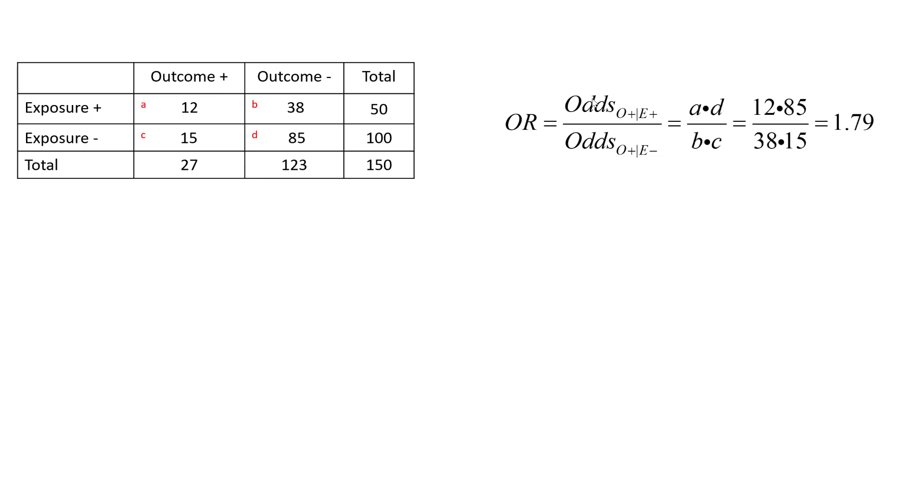In a cohort study, the odds ratio represents the odds of outcome given exposure compared to the odds of outcome given non-exposure. Using the standard calculation here, we end up with an odds ratio of 1.79.